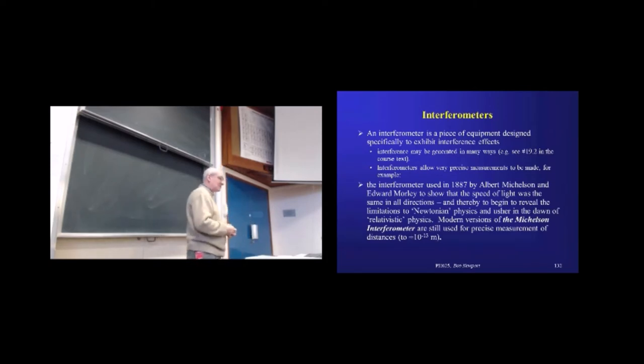An early example was the work that was done by Michelson Morley back in the late 19th century. And that was the first time anyone had been able to demonstrate reliably and accurately with enough precision that the speed of light was the same in all directions to begin to force the physics community, I suppose, to move away from believing that Newtonian physics was the be-all and end-all of everything. And it actually began to usher in the work that eventually led to what I guess we've now referred to as relativistic physics, so Einstein's theories and the theories of a lot of other people around that time as well.